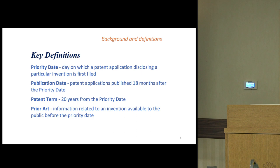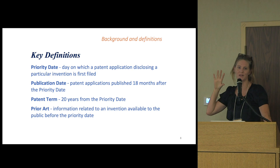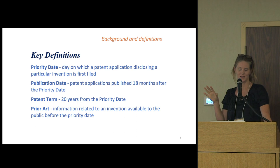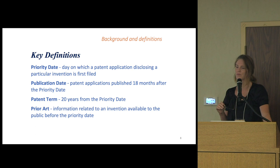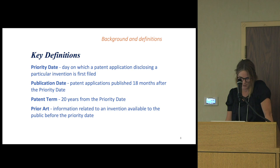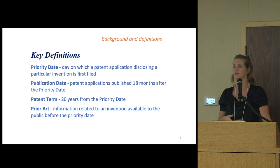Before we get into more detailed stuff, I wanted to go over some definitions. When you write a patent application, definitions are very important — you need to be crystal clear about what you're talking about. A priority date is the date at which you first disclosed your invention. That's an important date because that is the date at which the patentability of your invention will be assessed by examiners in different countries. A patent publication date is when a patent application is published, and the first patent application in a family will publish eighteen months after the priority date.